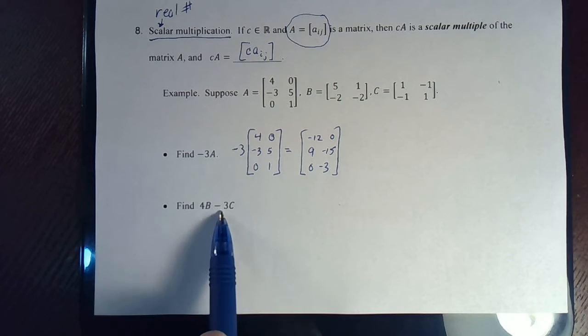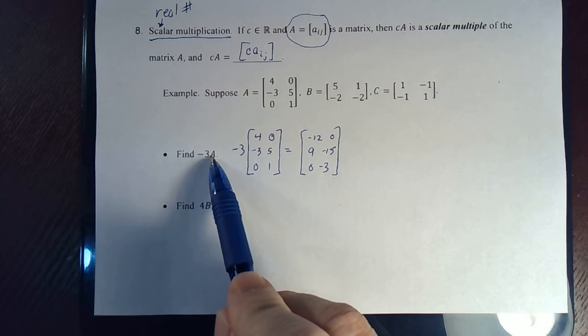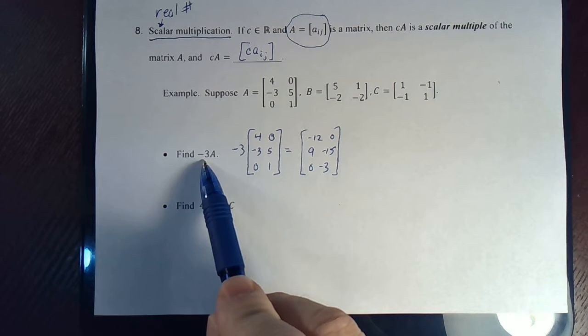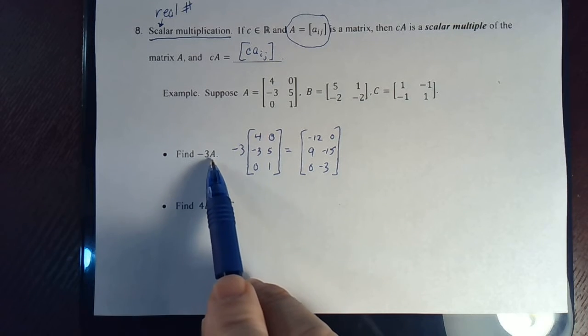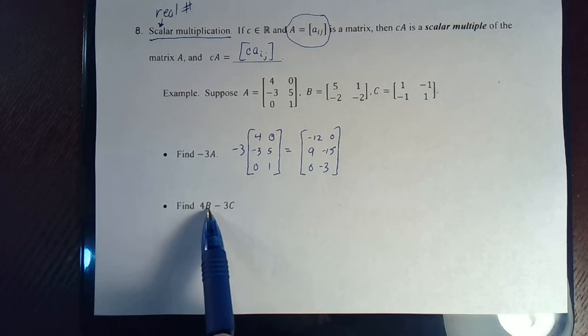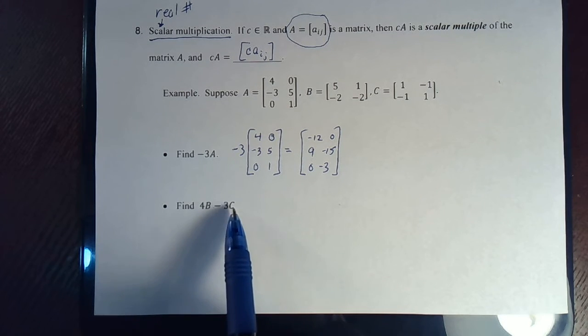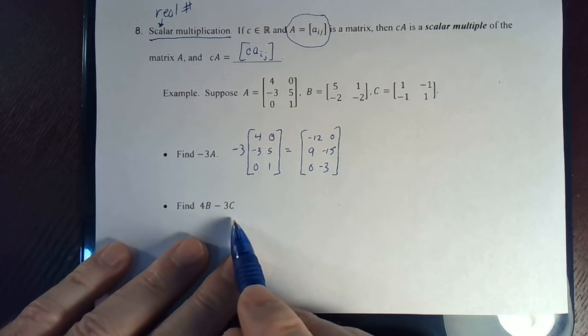Now let's do 4B minus 3C. All right. Well, first, let's make an observation before we do this one. When you take a matrix and multiply it by a scalar, is it possible that the size of the matrix is going to change? Absolutely not. Because all you're doing is taking A and you're just multiplying the elements by negative 3. Always keeps the same size. So in this case, 4B will be the same size as B. A negative 3C would be the same size as C. Are we able to subtract them? We are because B and C are the same size. They are both two by two matrices. Two rows, two columns.